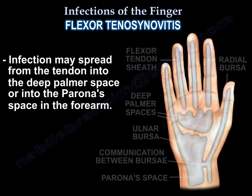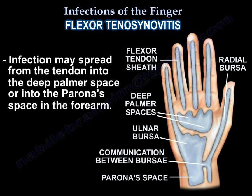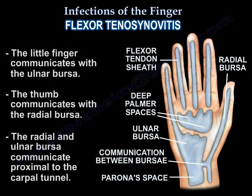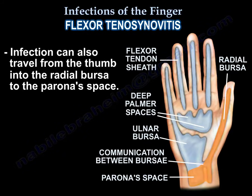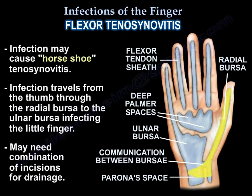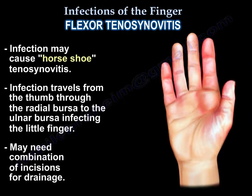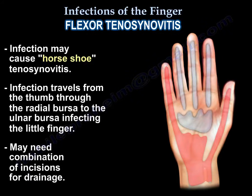Infection may spread from the tendon into the deep palmar space or into the Parona's space in the forearm. The little finger communicates with the ulnar bursa, and the thumb communicates with the radial bursa. The radial and ulnar bursae communicate proximal to the carpal tunnel. Infection may travel from the little finger into the ulnar bursa to Parona's space, or from the thumb into the radial bursa to Parona's space, potentially causing horseshoe tenosynovitis. Infection can travel from the thumb through the radial bursa to the ulnar bursa, infecting the little finger, and may require a combination of incisions for drainage.